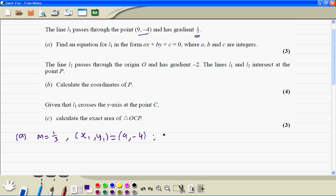Then the equation of straight lines, y minus the y coordinate equals m bracket x minus the x coordinate.